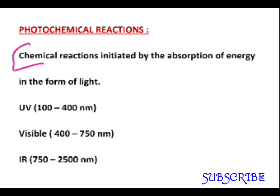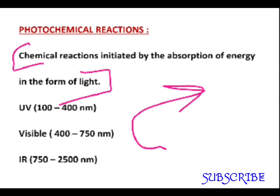Photochemical reactions are the chemical reactions initiated by the absorption of energy in the form of light. So what happens as a consequence? Molecules, as soon as they absorb this light energy, jump into the transient excited state, and definitely the chemical and physical properties of these molecules in this excited state differ greatly from that of the original molecules.